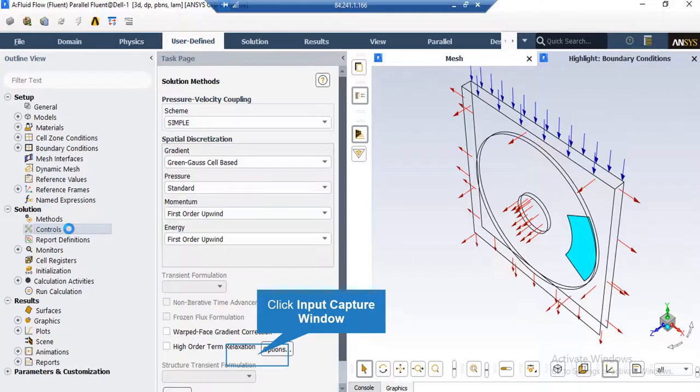We may also change the under relaxation factors. These factors may be between zero and one. Based on the simulation and the project we are doing, we may change these under relaxation factors. But remember that the values set in here are the recommended values for the project, and we highly recommend you to not change these values.